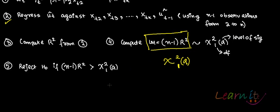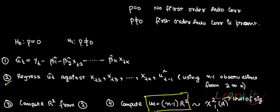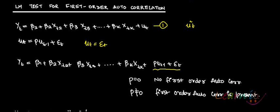The good thing about the LM test is that it is not inconclusive. However, it does require a large number of observations — it is a large sample test. So this was the LM test for first-order autocorrelation.